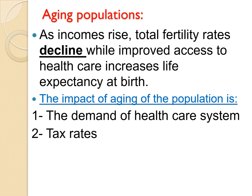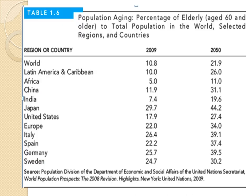The extent of this increase depends on the rate of improvement in life expectancy. This table shows population aging — the percentage of elderly people over 60 years to the total population — for selected regions and countries. In the world in 2009, the aging population percentage was 10.8%, and it will increase by 2050 to 21.9%. In India, it is 7.4% and will increase by 2050 to 19.6%.